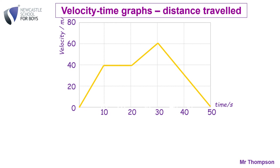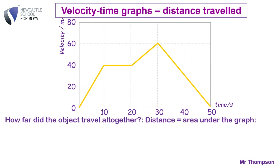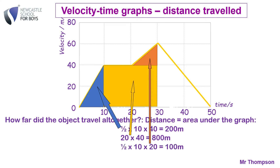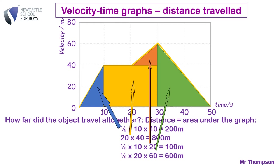Here's last week's example again. To work out the distance travelled, you work out the area under the graph. The first triangle is half base times height: 10 times 40, halved, is 200. The rectangle is 20 times 40 = 800. The next triangle gives 100, and the last one gives 600. Add the four areas together and you get the total distance of 1700 metres.